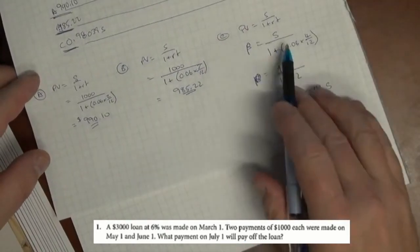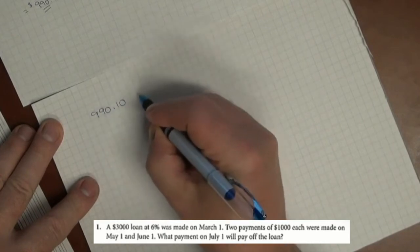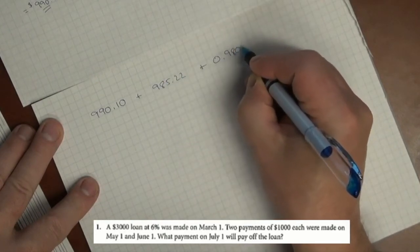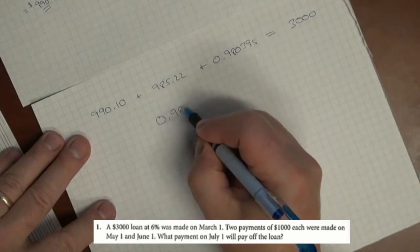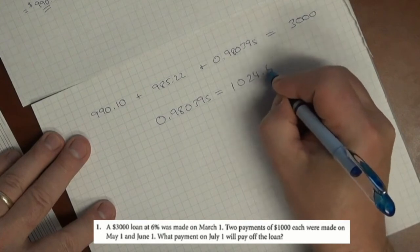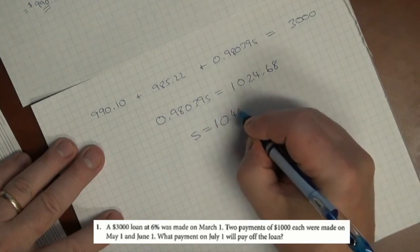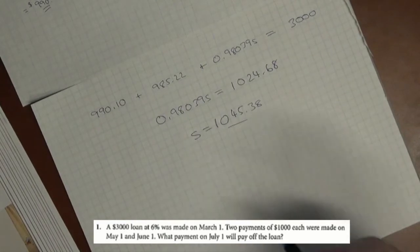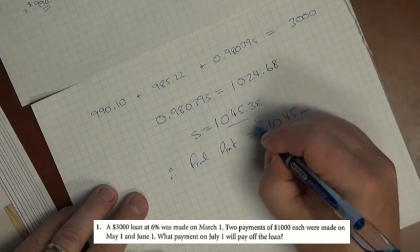Now that we've calculated these three, we set it up like this: 990.10 plus 985.22 plus 0.98039S equals $3000, which is the original loan. We bring this over, so 0.98039S equals 1024.68. We divide and get S equals $1045.38. So the value of the final payment is $1045.38. That's how that's done.